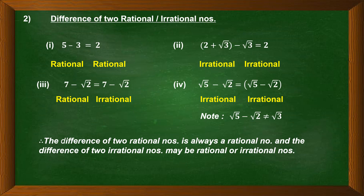Now let us study the difference of rational and irrational numbers. For two rational numbers: 5 minus 3 equals 2, a rational number. For two irrational numbers: (2 plus root 3) minus root 3 — the root 3 terms cancel, leaving 2, a rational number. For rational minus irrational: 7 minus root 2 gives 7 minus root 2, which is irrational.